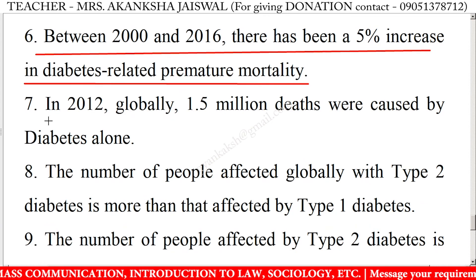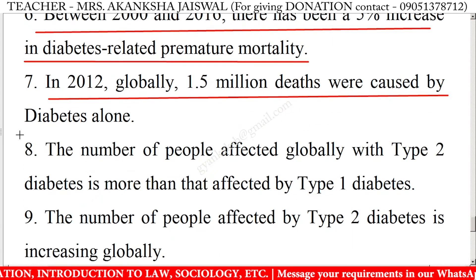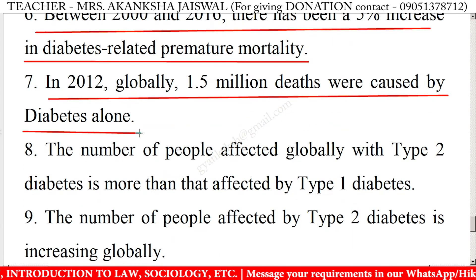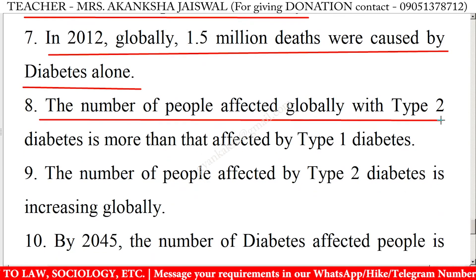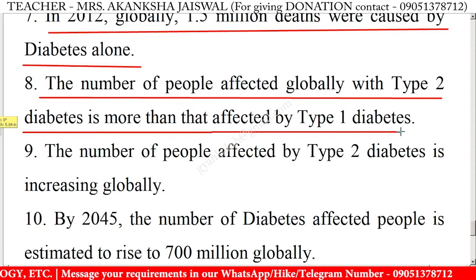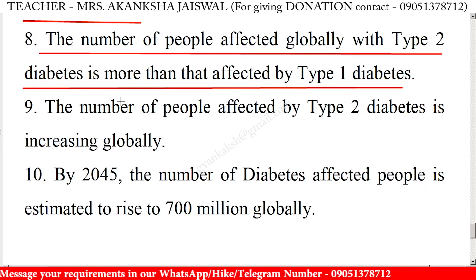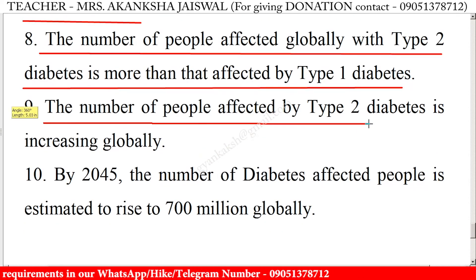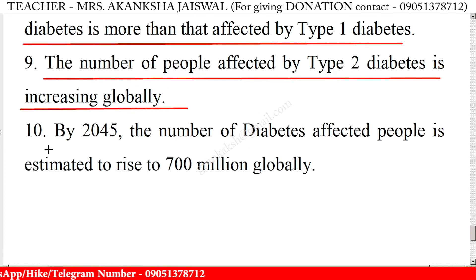Between 2000 and 2016, there has been a 5% increase in diabetes-related premature mortality. In 2012, globally, 1.5 million deaths were caused by diabetes alone. The number of people affected globally with type 2 diabetes is more than that affected by type 1 diabetes. The number of people affected by type 2 diabetes is increasing globally, and by 2045, the number of diabetes-affected people is estimated to rise to 700 million globally.